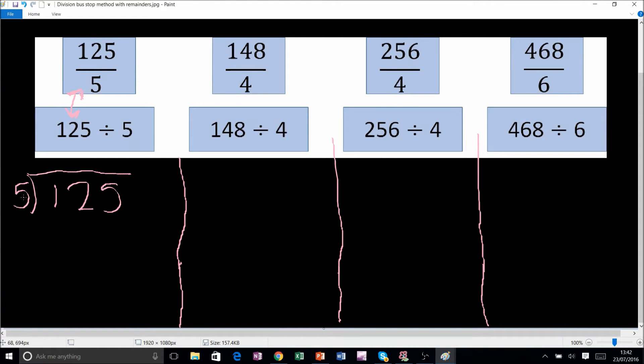We say how many fives go into one? We can't do that. Well, zero, remainder one. So we put the one there beside the 2. How many fives go into 12? Well, two, remainder two. So we put the two beside the five here, so that now becomes 25. How many fives go into 25? Well, five, remainder zero.